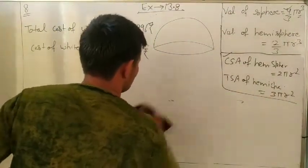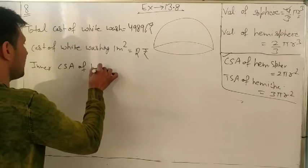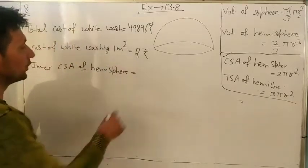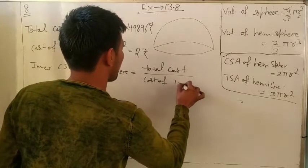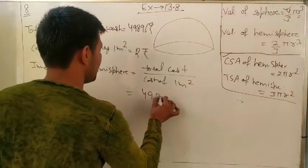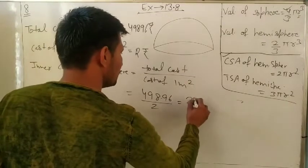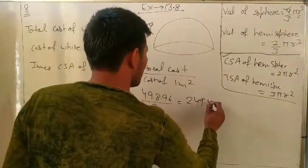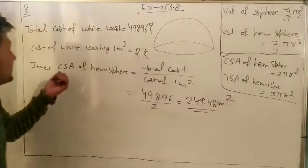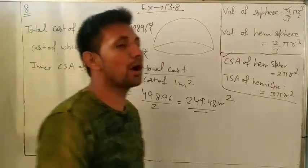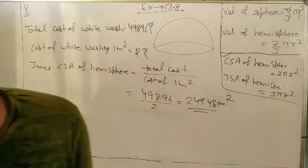So the inner CSA = total cost ÷ cost of one meter square = 498.96 ÷ 2 = 249.48 meter square. So the inner CSA of the hemisphere is 249.48 m².